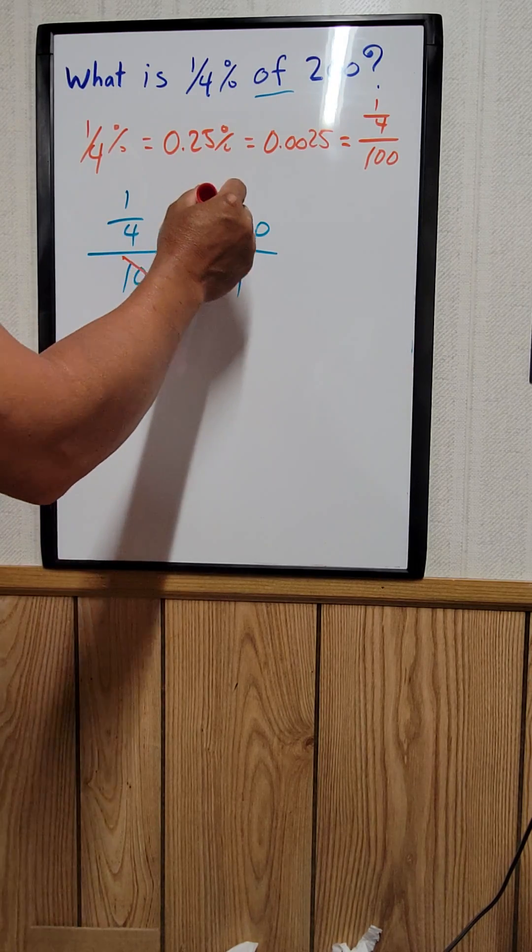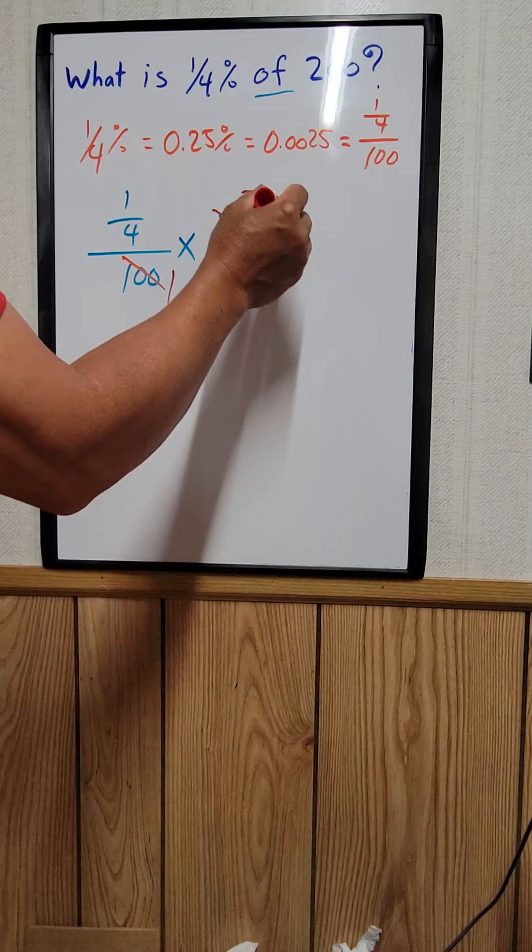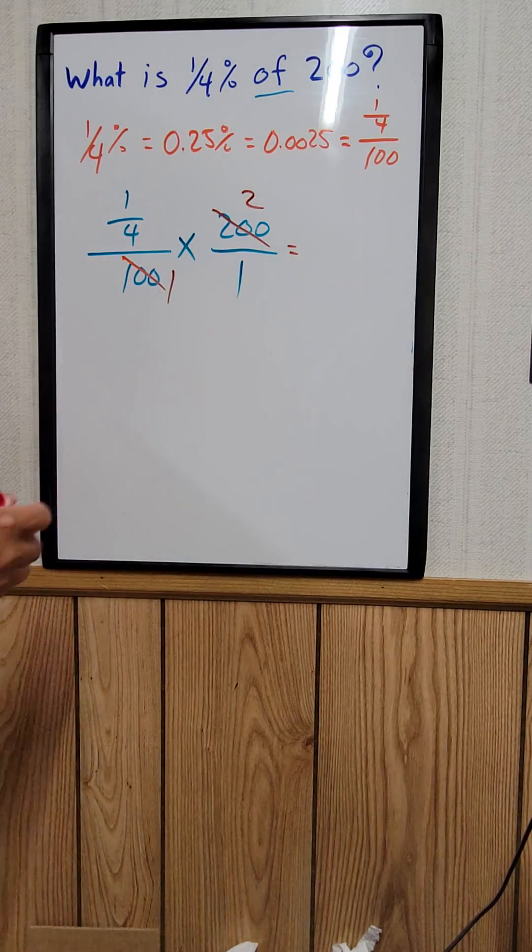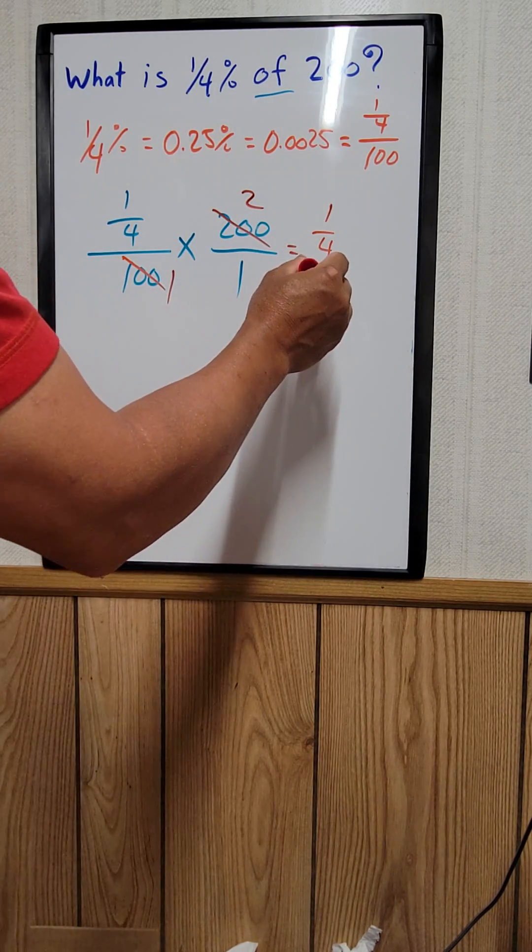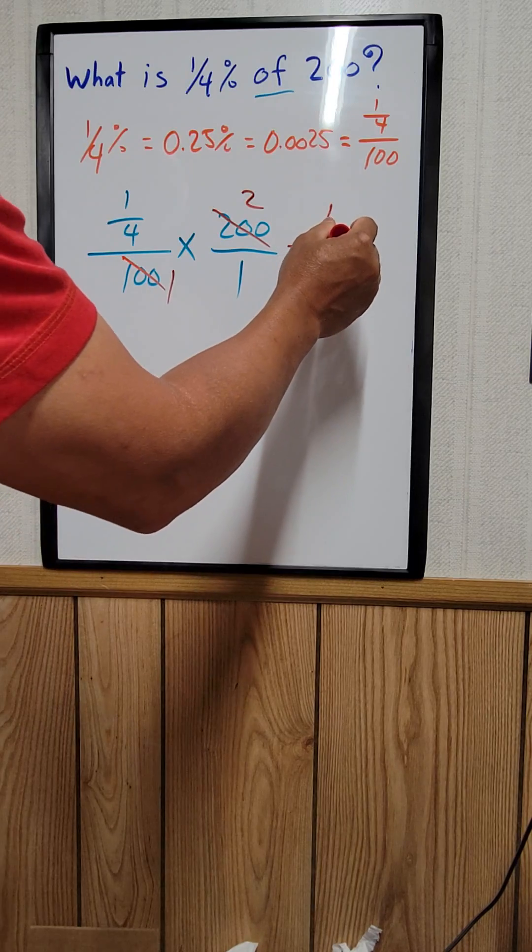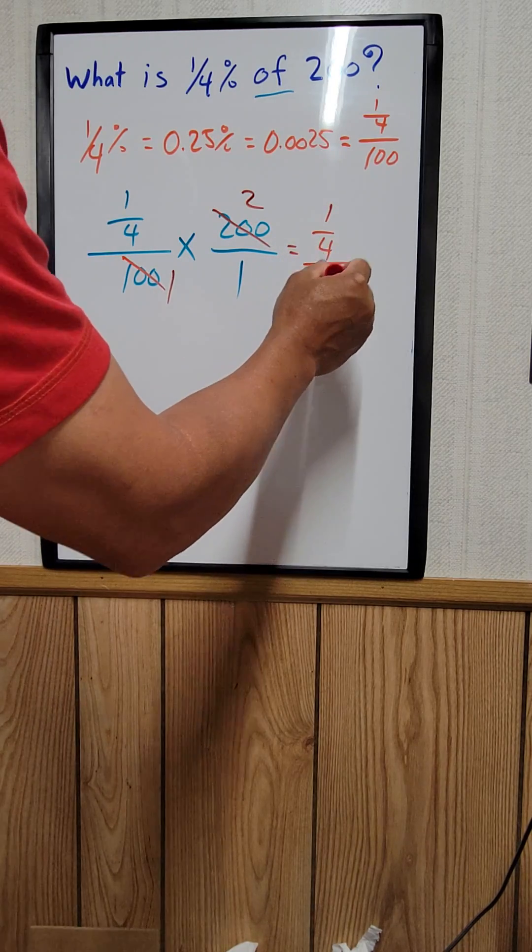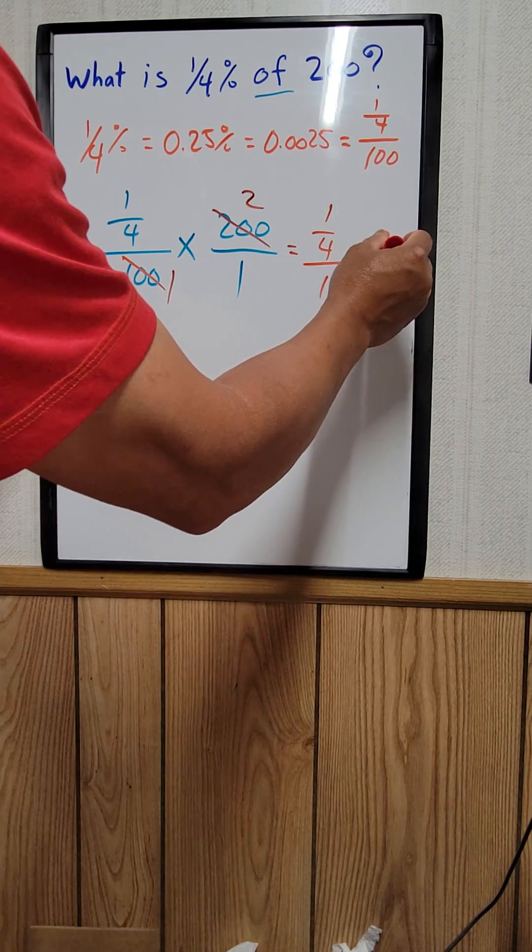That's equal to one, that's equal to two. So that's equal to one over four, divide by one, times two over one.